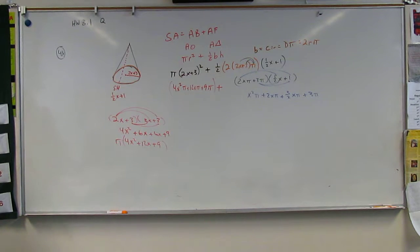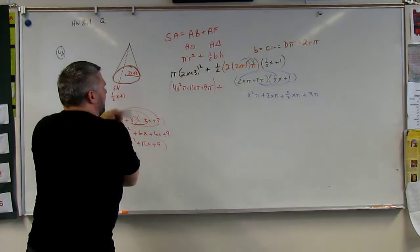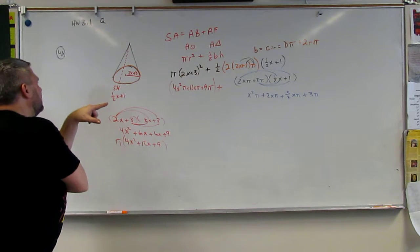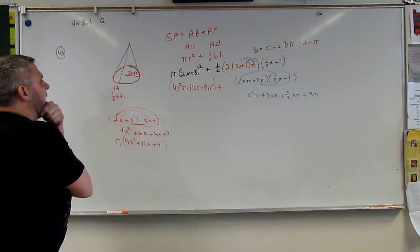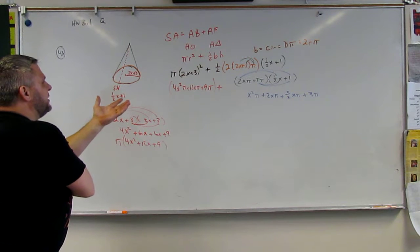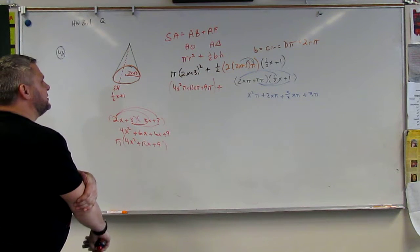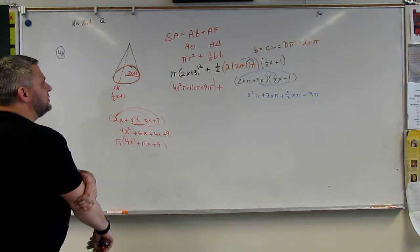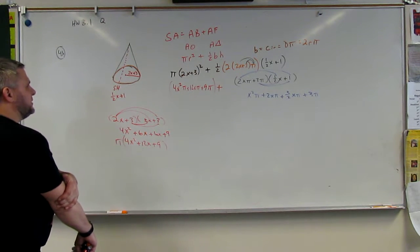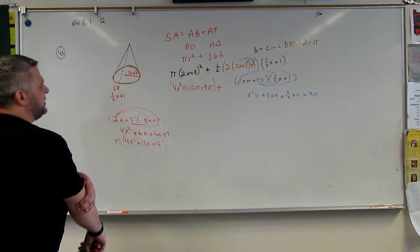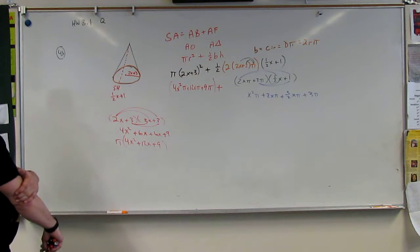Did I set that up wrong? Yes. 1 half base times height. The base is the perimeter, it's the base is 2r pi, 2r pi. And 1 half of 2 is 1, so we're left with 2x plus 3, so 2x pi plus 3 pi.